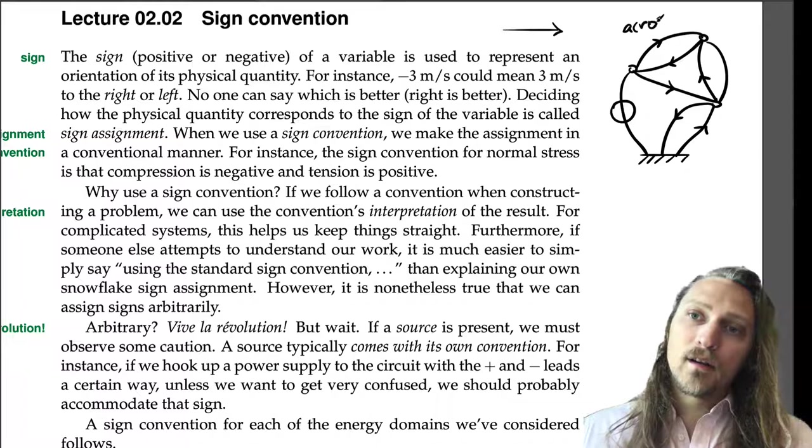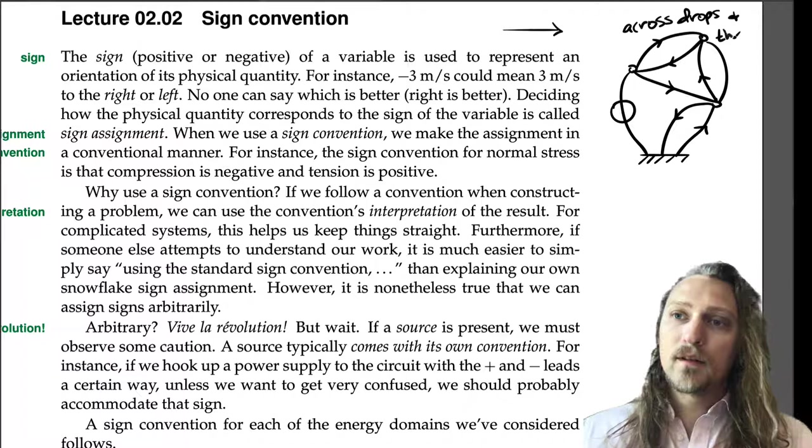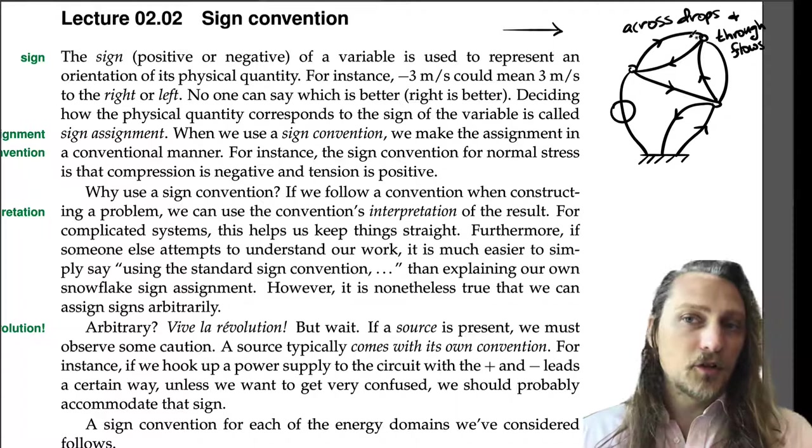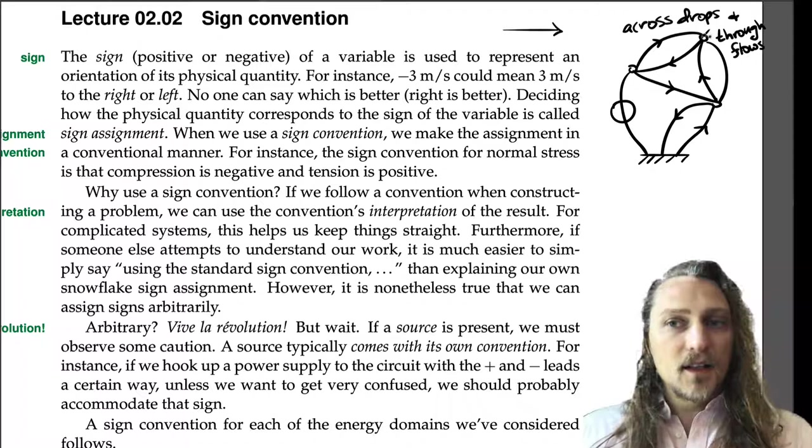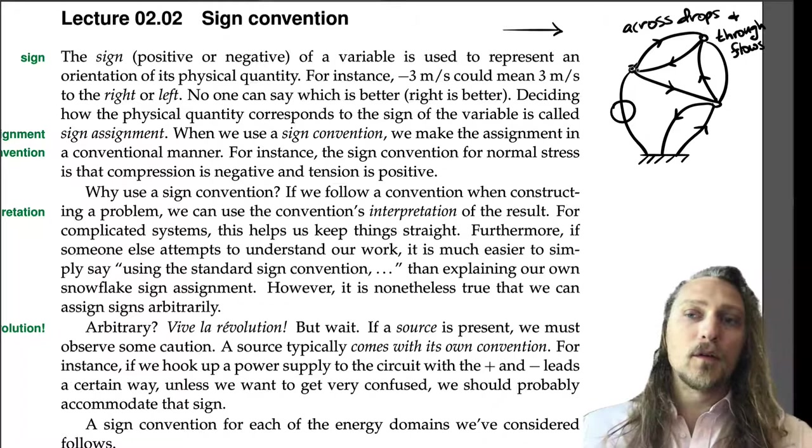The across variable drops, and the through variable flows in that direction. So if it's voltage and current, an electronic element, then this would be the direction of voltage drop and current flow. If it's a mechanical element with velocity as the across variable, this would be the direction it would be assigned to drop, or assumed to drop. And the force would go from this node to that node in terms of the application.